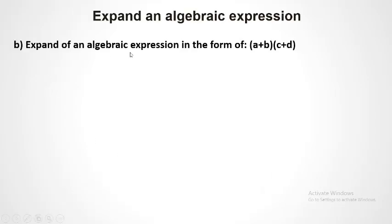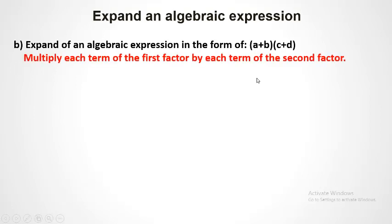Now expand an algebraic expression in the form of two factors of more than one term: A plus B, multiplied by C plus D. Here we have to multiply each term of the first factor by each term of the second factor.